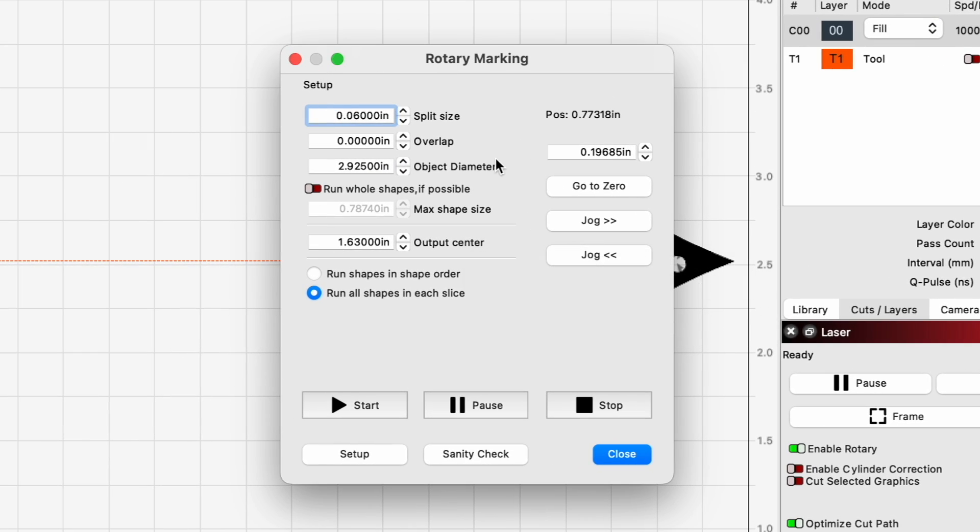Lightburn will bring this box up to remind you. But I totally forgot because we adjusted where we're going to put this design on the cup. We're putting it a little bit lower. That is going to change our object diameter. So I went ahead and re-measured. And we are now at 2.75. And again, this is the middle of our design. So now we can go ahead and start.